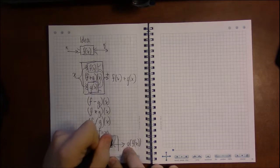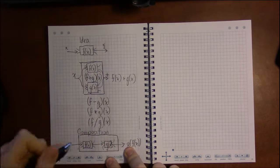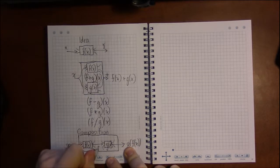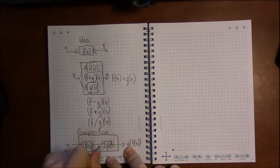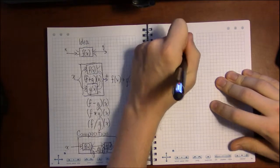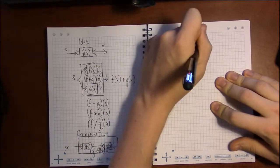And the notation for this function, we're going to call this g circle f of x. So whenever you see this, it almost looks like multiplication, but it's not.